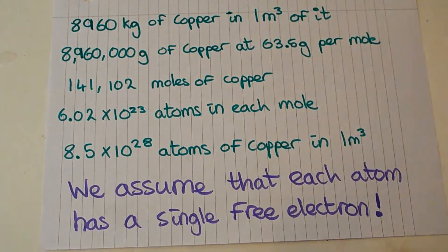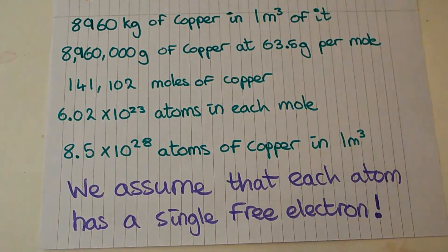So we've got 8,960 kilograms of copper in a meter cubed of it, and that means that we've got 8,960,000 grams of copper at 63.5 grams per mole. That means by dividing 8,960,000 by 63.5 we can work out that we have 141,102 moles of copper.